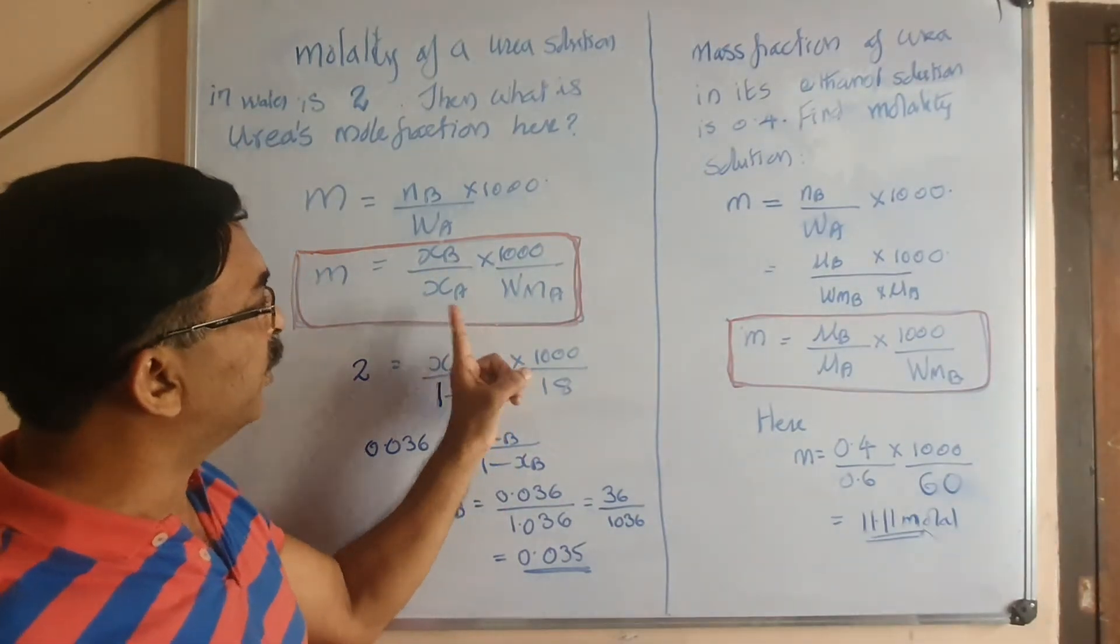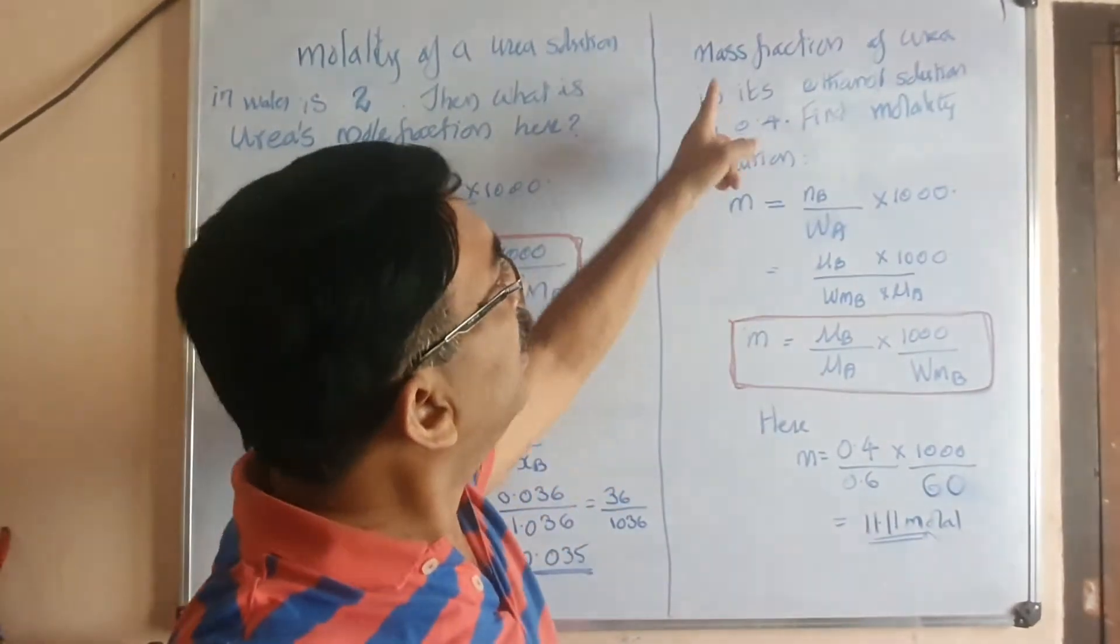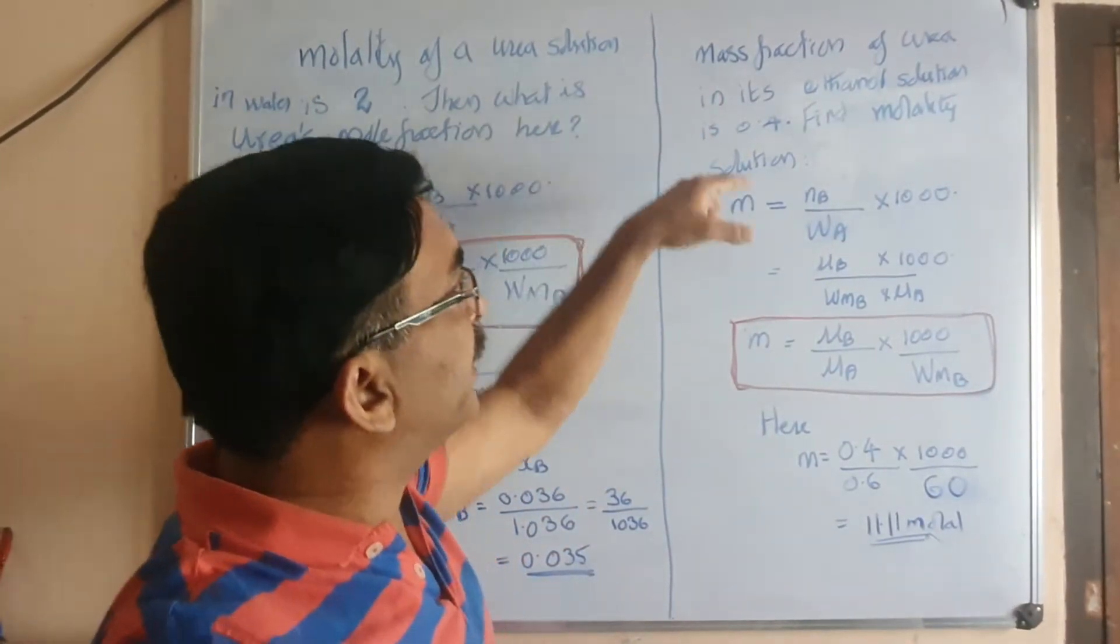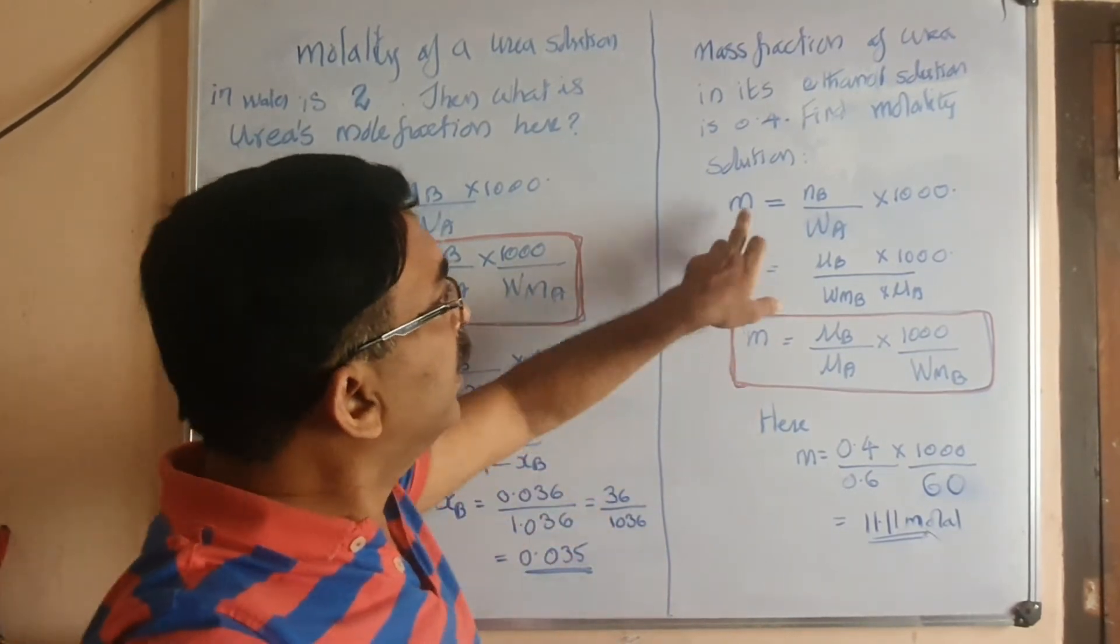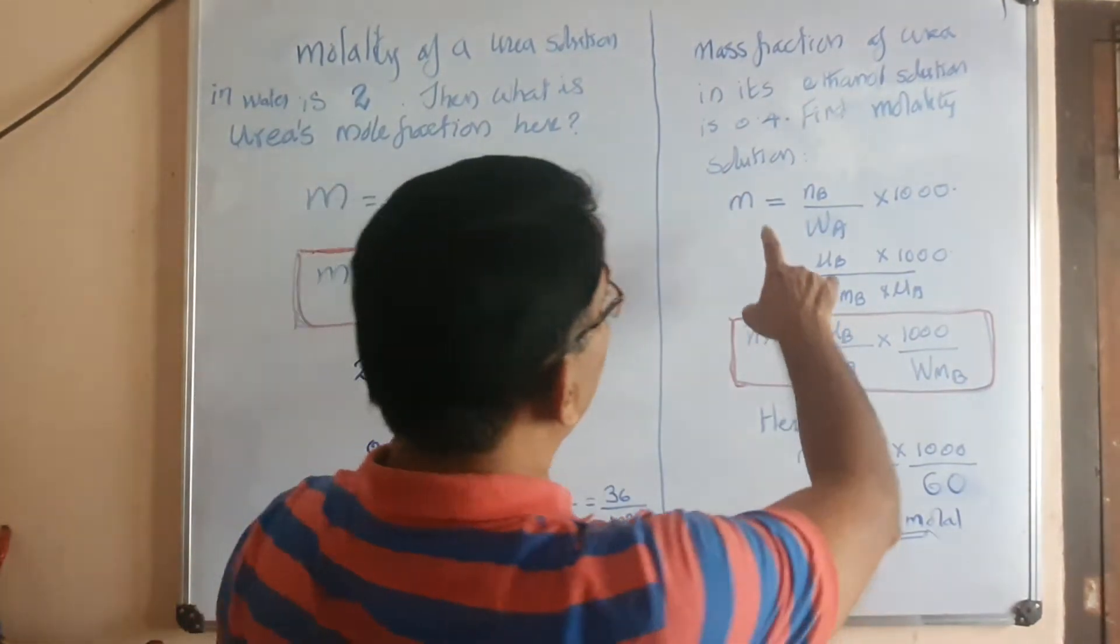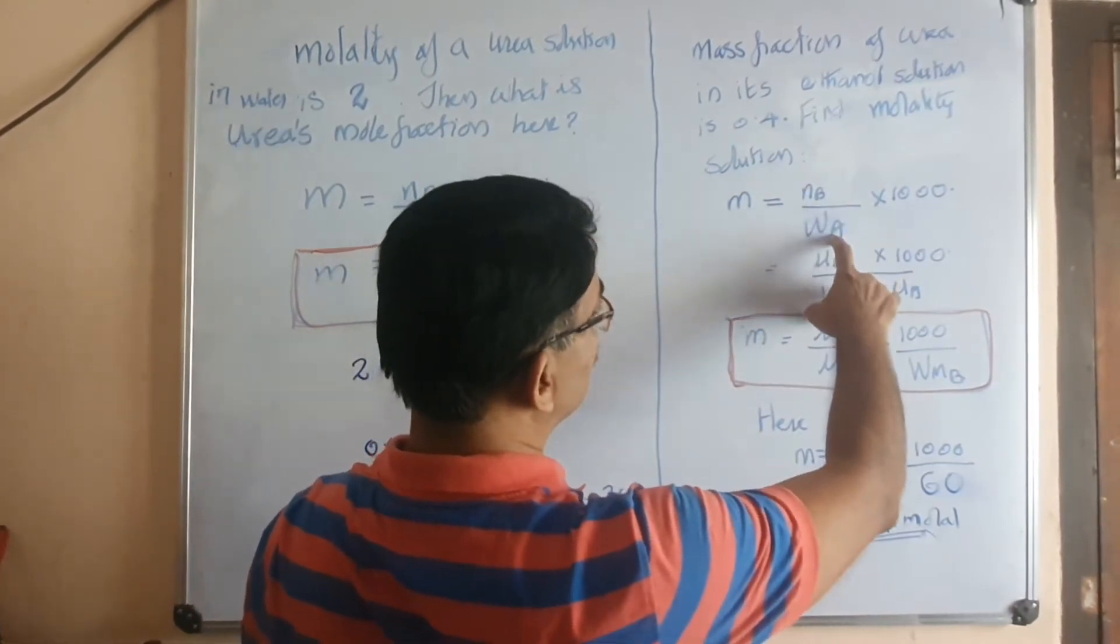So the only thing is that you have to memorize this. Now we go to the other section: mass fraction of urea in its ethanol solution is 0.4, find its molality. Start from what we know: molality equals number of moles of solute by mass of solvent times 1000.